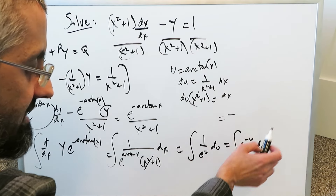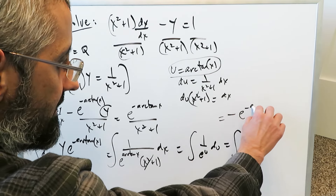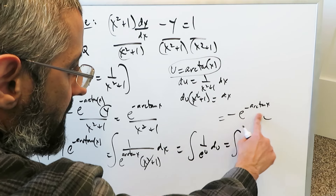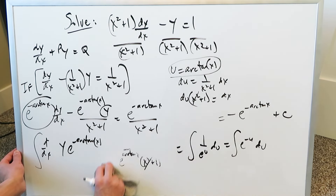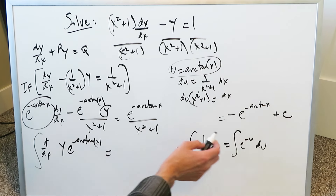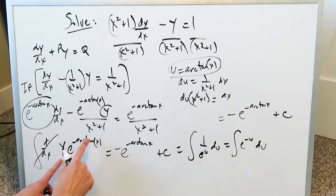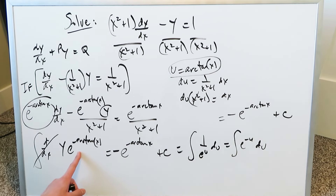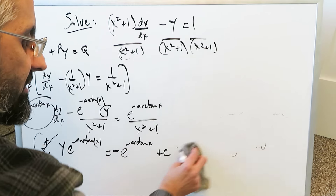When you integrate e to the minus u you get minus e to the minus u plus c. Substituting back, u is arctan x, so this becomes minus e to the minus arctan x plus c. Bringing that back into the equation, y e to the minus arctan x equals minus e to the minus arctan x plus c.